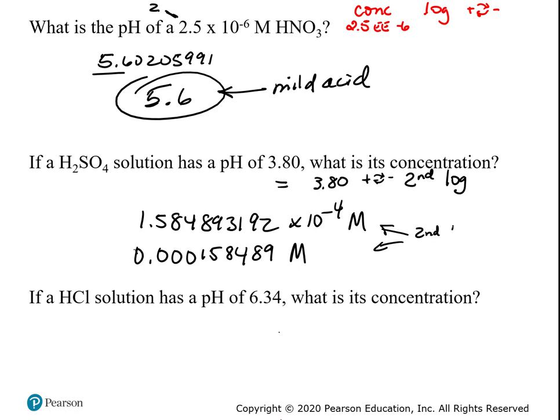Remember: second button and number 4, second button and number 5 — those are the ones to flip back and forth from decimal format to scientific notation. But you can't keep all those decimal places. How many do you need? Three decimal places in the pH, so that means 158 — the next number is a 4, so those round off. My number ends up being 1.58 times 10 to the minus 4th, or 0.000158. They're both the same.